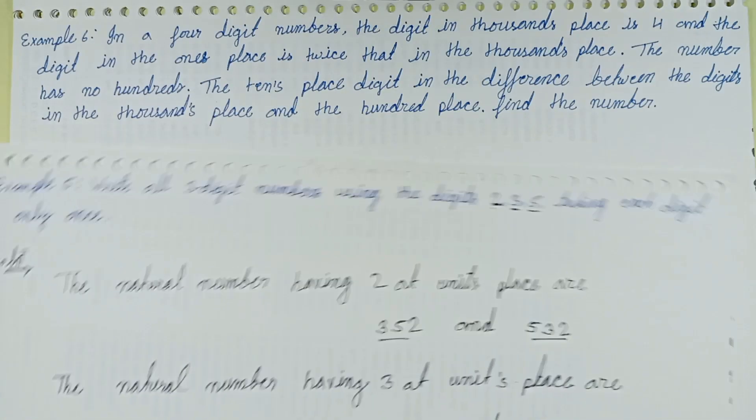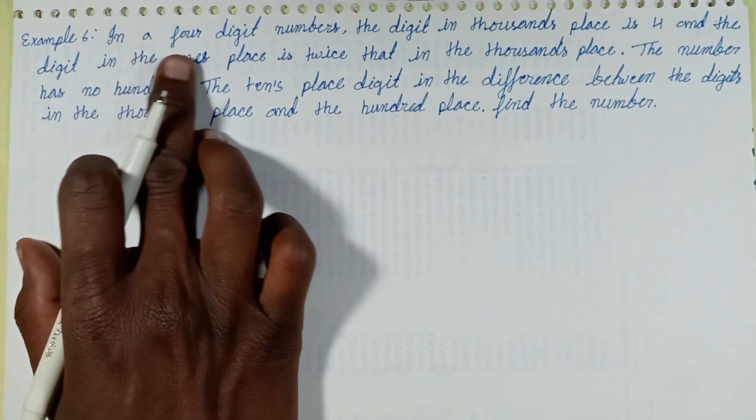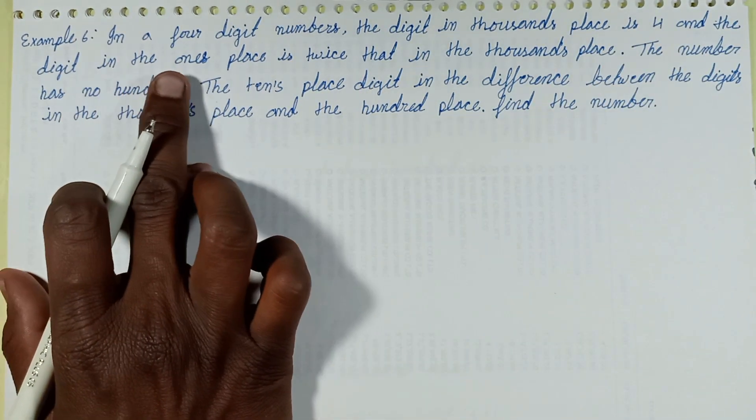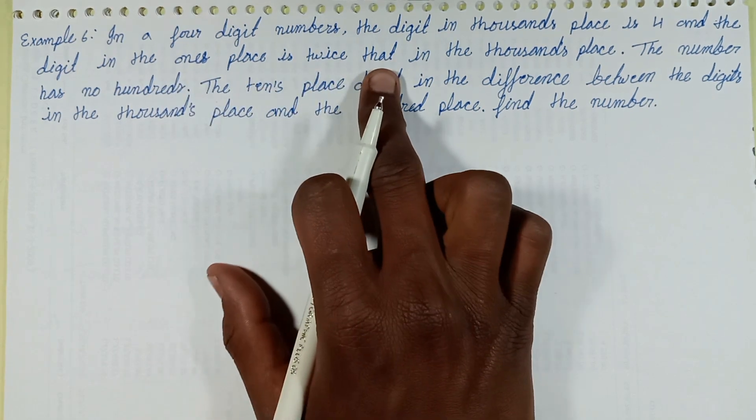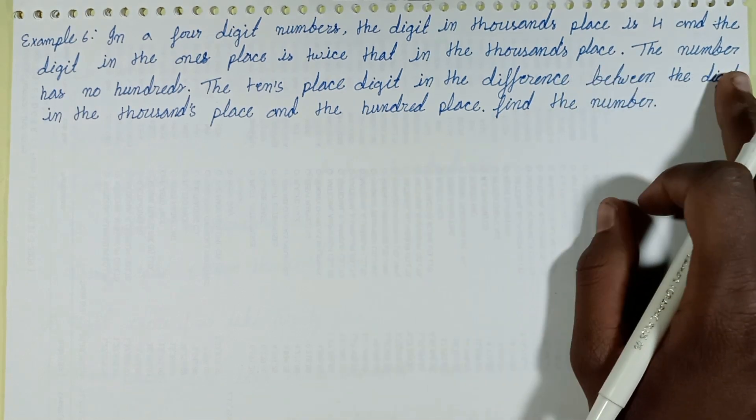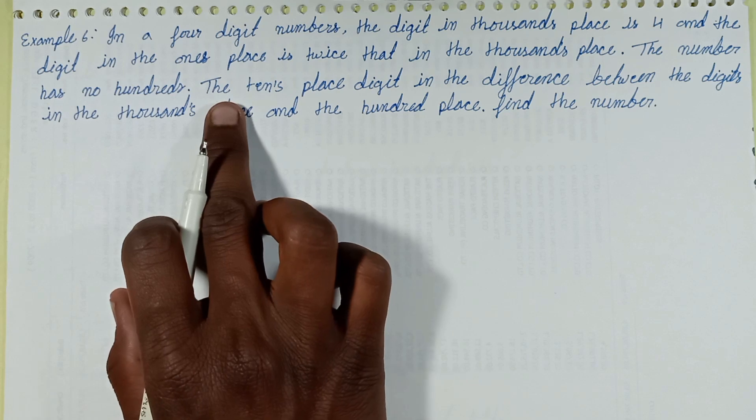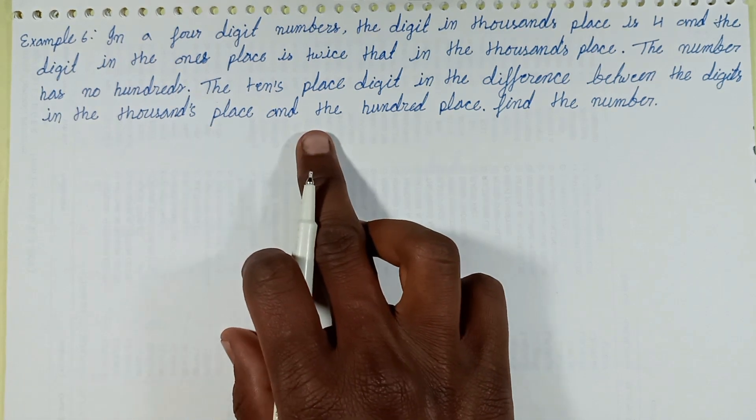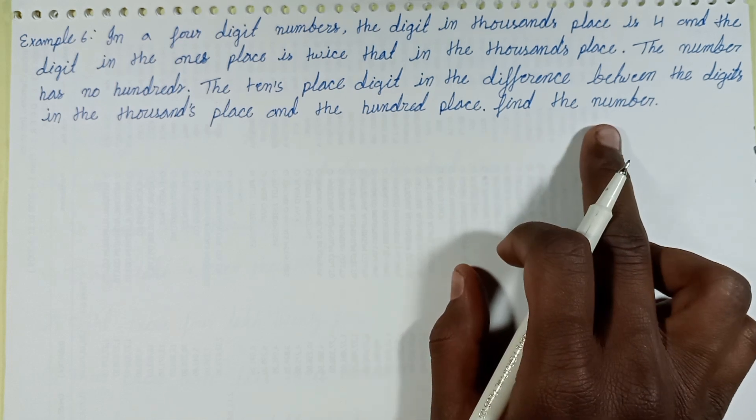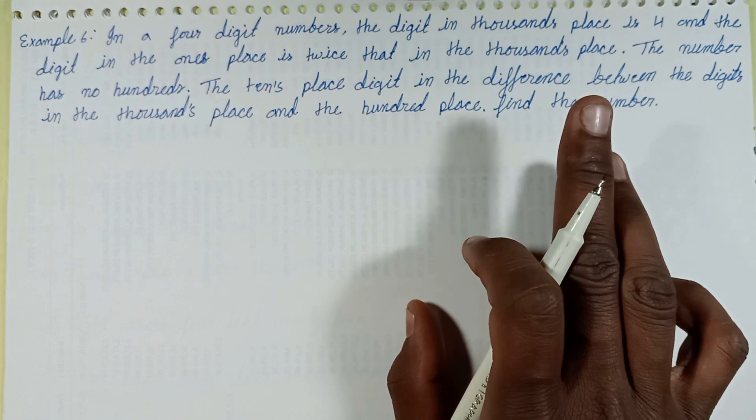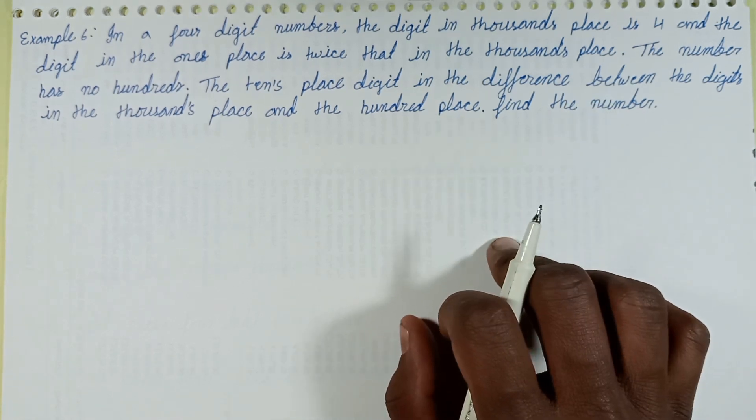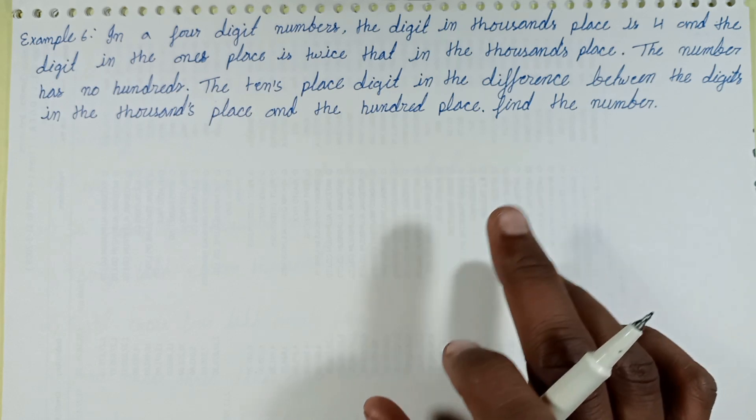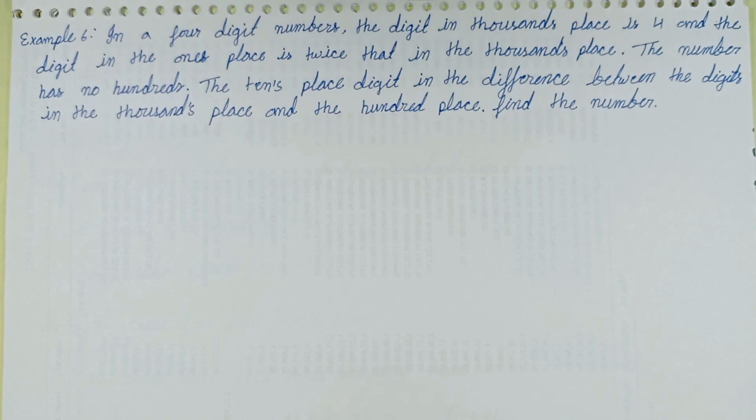Next question, Example 6: In a 4-digit number, the digit in thousands place is 4 and the digit in the ones place is twice that in the thousands place. The number has no hundreds. The tens place digit is the difference between the digit in the tens place and the hundred place. Find the number. This question is discussed in the next episode, link given in description. Thanks for watching this video.